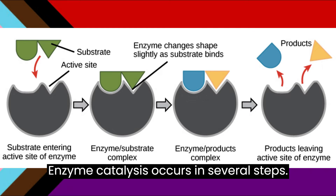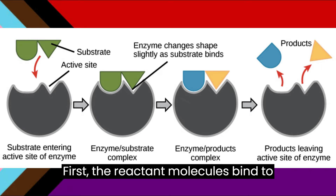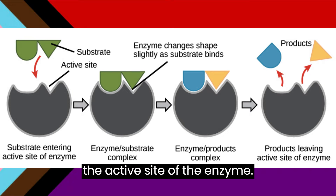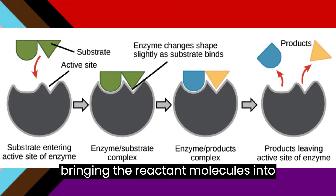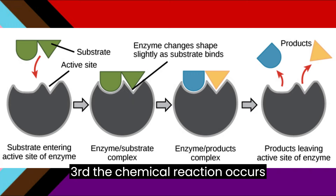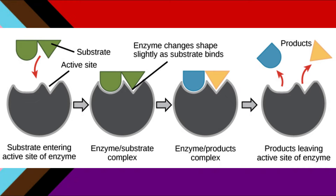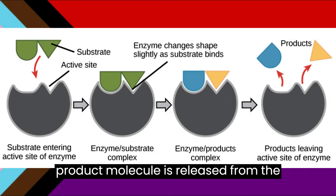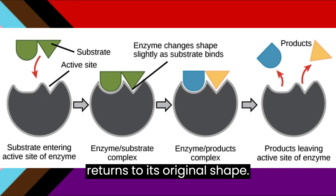Enzyme catalysis occurs in several steps. First, the reactant molecules bind to the active site of the enzyme. Second, the enzyme changes shape, bringing the reactant molecules into close proximity to each other. Third, the chemical reaction occurs, resulting in the formation of a product molecule. Finally, the product molecule is released from the active site of the enzyme, and the enzyme returns to its original shape.